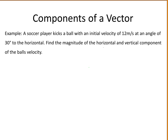In this question we are told that a soccer player kicks a ball with an initial velocity of 12 meters per second at an angle of 30 degrees to the horizontal. We are asked to find the magnitude of the horizontal and vertical components of the ball's velocity. The first thing to do is to draw a picture representing this information, as it gives you a clear understanding of what is going on in the question.